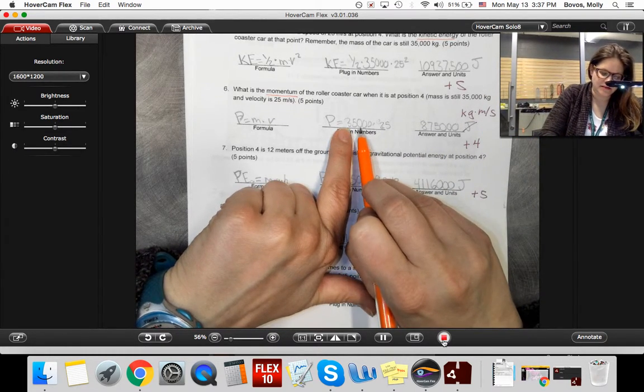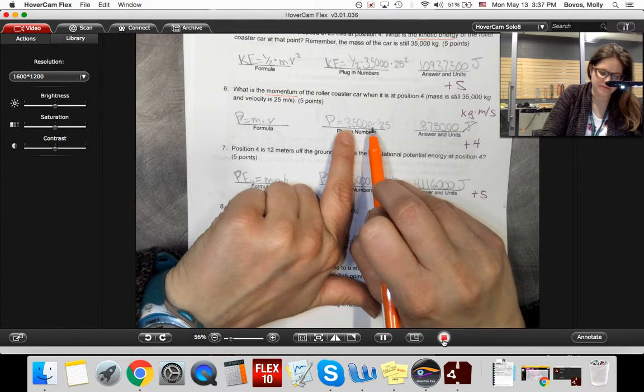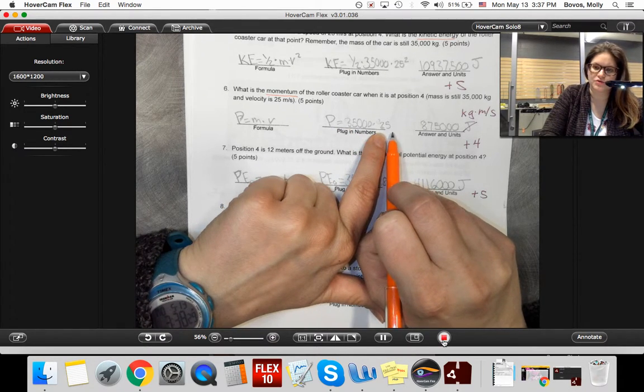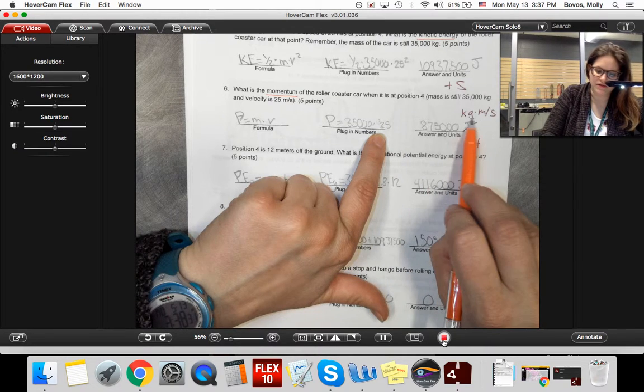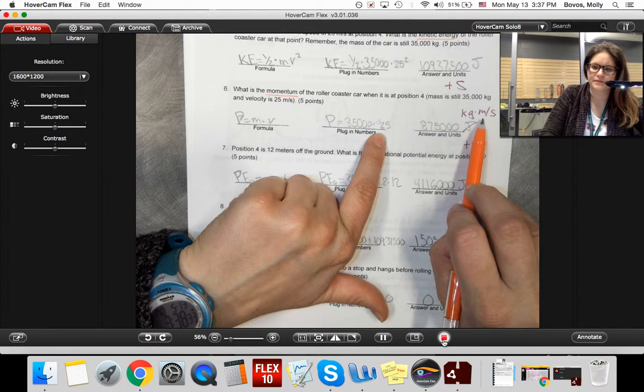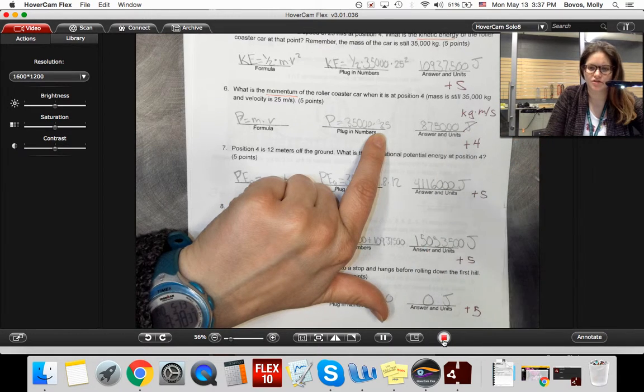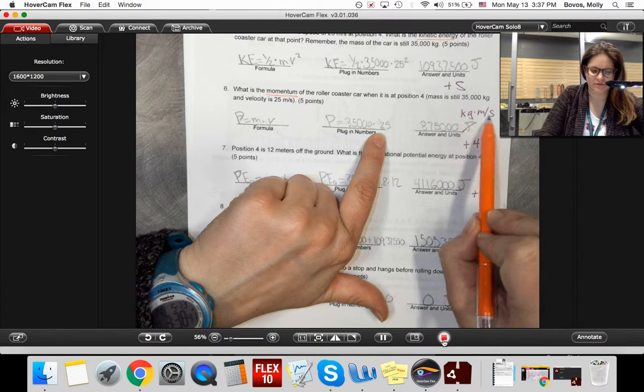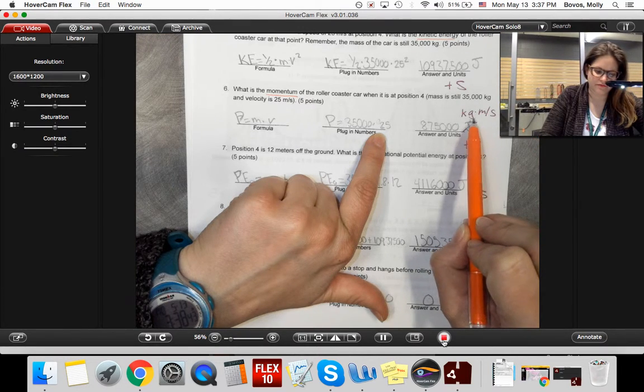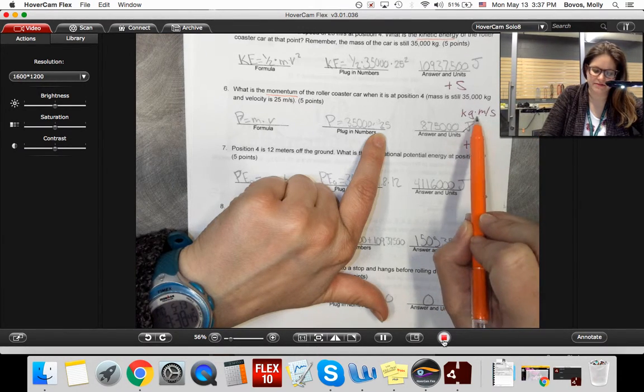This is 35,000 kilograms times 25 meters per second. We don't have any fun name for the unit for momentum like we do for joules for energy or newtons for force. There isn't anything for momentum. It's just kilograms times meters per second.